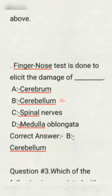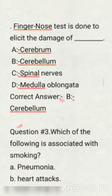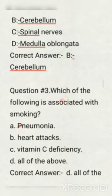Next question: finger-nose test is done to elicit damage of which structure? Options are: cerebrum, cerebellum, spinal nerve, medulla oblongata. Correct answer: option B, cerebellum.